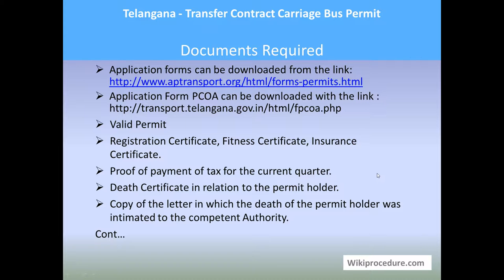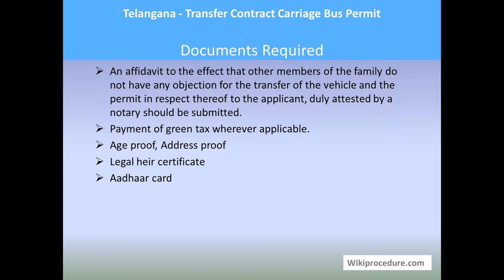The remaining documents required are: valid permit, registration certificate, fitness certificate, insurance certificate, proof of payment of tax for the current quarter, death certificate of the permit holder, a copy of the letter in which the death was intimated to the competent authority, an affidavit stating that other family members have no objection to transferring ownership to the legal heir — duly attested by a notary — payment of green tax wherever applicable, age proof, address proof, legal health certificate, and other relevant cards.